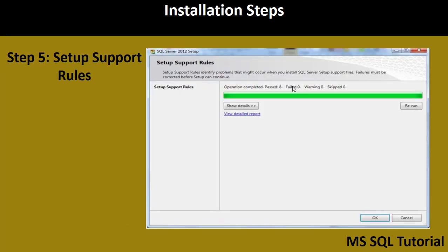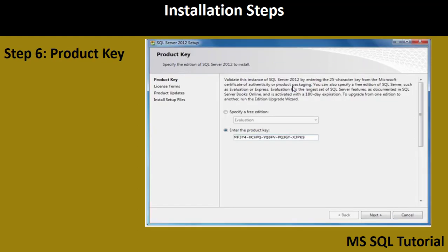As Step 5, it will install the setup support files required on your local system. If all checks pass, click OK. If any checks fail, the OK button will not be enabled — fix the issues and rerun. Step 6 is the Product Key. This validates the instance you are creating in SQL Server 2012. If using a free edition, select 'Specify a free edition'; otherwise, enter your product key and click Next.